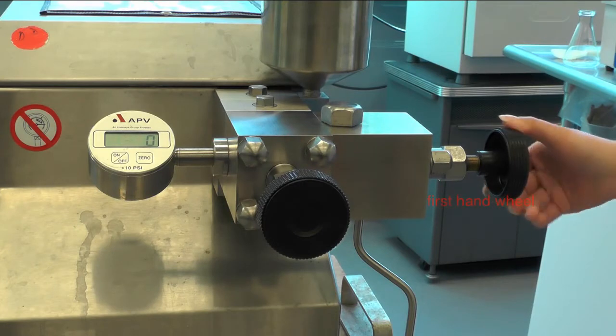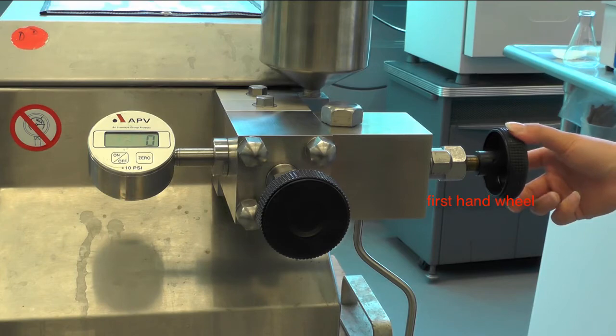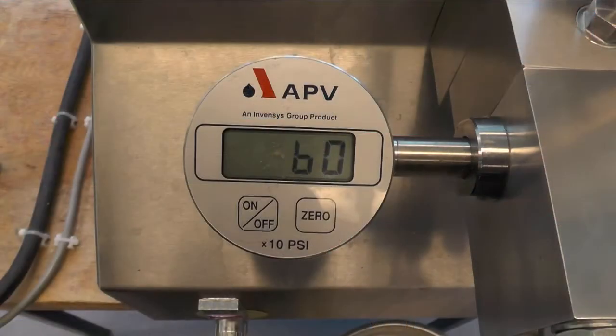To activate pressure, turn the first hand wheel clockwise very slowly to open the homogenization valve until 60 is displayed on the pressure gauge.